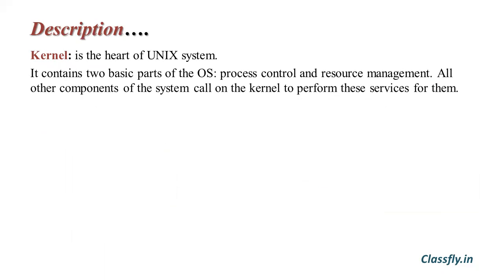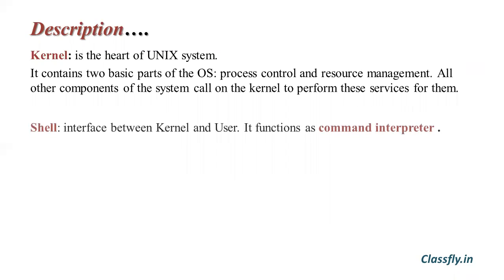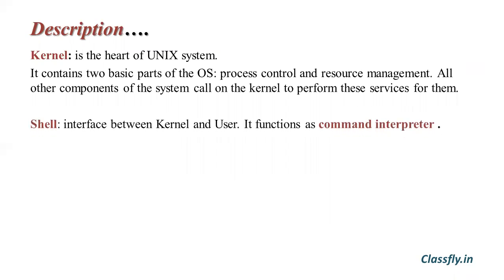The kernel is an important part of the UNIX system — it is the heart of the UNIX system. It contains two basic parts of the operating system: process control and resource management. All other components of the UNIX system rely on the kernel to perform these services for them. The shell, as we studied in the architecture of UNIX, is an interface between kernel and user and functions as a command interpreter — it receives and interprets commands from the user and interacts with the hardware.